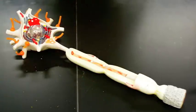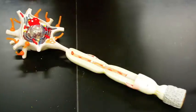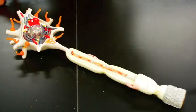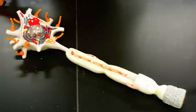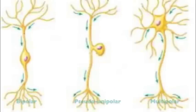This is our neuron model, and the first thing we are going to do is classify it — both structurally and functionally. When classifying it structurally, we have three choices: it is either a pseudo-unipolar neuron, a bipolar neuron, or a multipolar neuron.